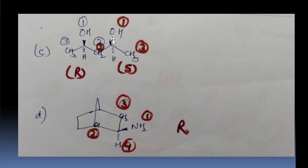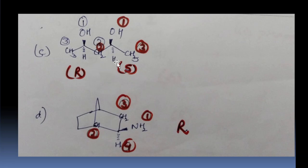Now about the second chiral carbon: 1, 2, 3, and 4. Going 1, 2, 3, 4 we are getting S because hydrogen is below the plane. When hydrogen is below the plane, we do not change the configuration.